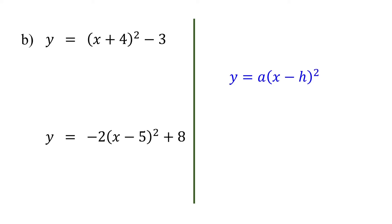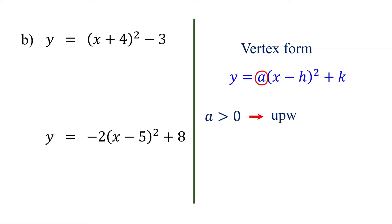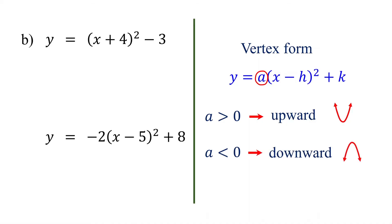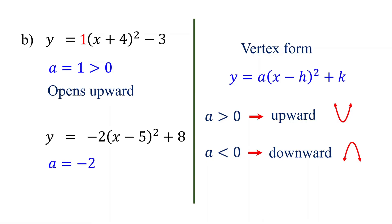When a quadratic function is given in vertex form, again you need to focus on the sign of a. If a is greater than 0, the parabola opens upward. If a is less than 0, the parabola opens downward. For the first function, a is 1, which is greater than 0, so the parabola opens upward. For the second function, a is negative 2, which is less than 0, so the parabola opens downward.